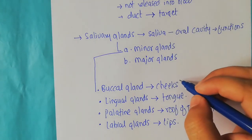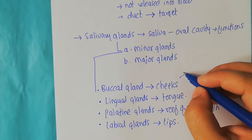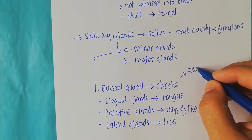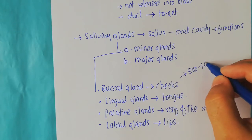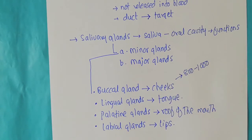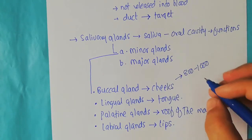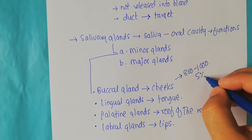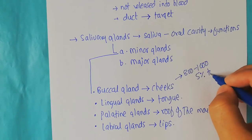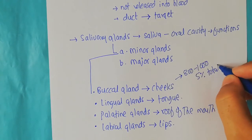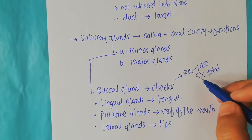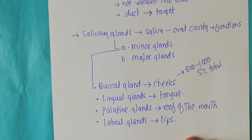In terms of numbers, there are between 800 to 1000 minor glands present in the oral cavity, and they release about five percent of the total saliva.